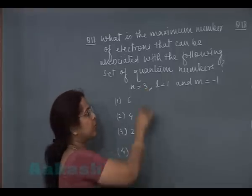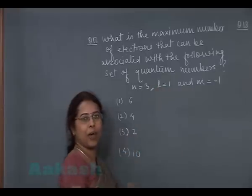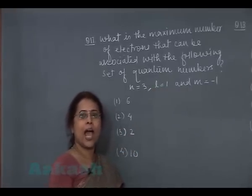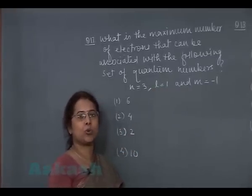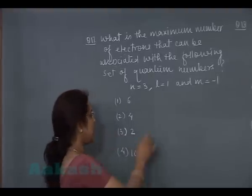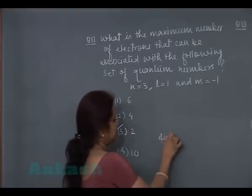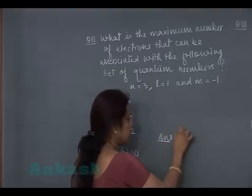The three quantum numbers—principal, azimuthal, and magnetic quantum number—represent an orbital, and any orbital can accommodate a maximum of two electrons. So your answer should be 2. Answer is third option.